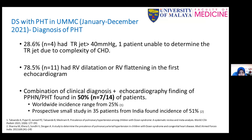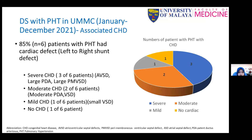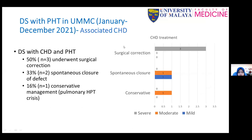Eleven out of fourteen patients had RV dilatation and RV flattening on their first echocardiogram. Combining clinical diagnosis and echocardiographic findings, the diagnosis of pulmonary hypertension was confirmed in 50% — seven out of fourteen patients. The worldwide incidence ranges from 25%, while a small Indian study found approximately 51%. Six of the seven patients with pulmonary hypertension had a cardiac defect: three severe, two moderate, and one mild, with one having no cardiac defect. Of the patients with cardiac defects and pulmonary hypertension, 50% underwent surgical correction, 33% had spontaneous closure, and one was managed conservatively due to pulmonary hypertensive crisis.